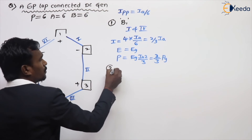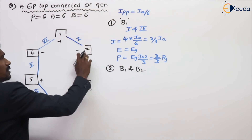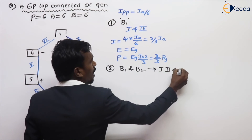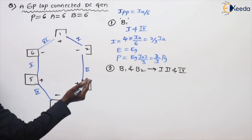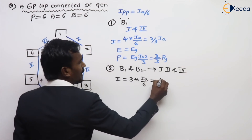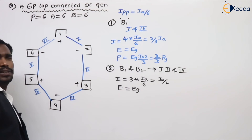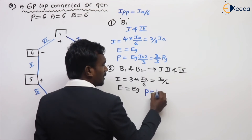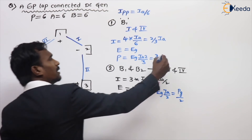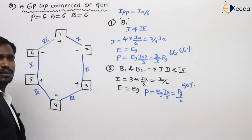Second case for six-pole: brush 1 and brush 2 both damaged. When brush 2 is also damaged, parallel paths 1, 2, and 4 are disconnected — meaning 3 parallel paths are open. Remaining we have only 3 active parallel paths, each carrying Ia by 6. So the current is 3 times Ia by 6, which equals Ia by 2. The EMF is unchanged. Power equals EG times Ia by 2, which is PG by 2 — 50% of power develops.